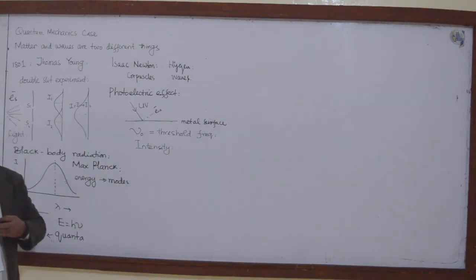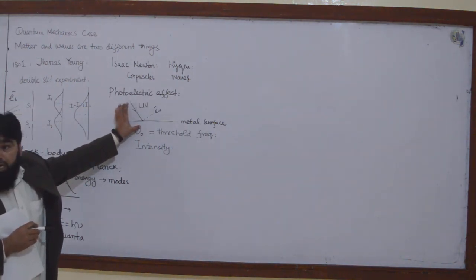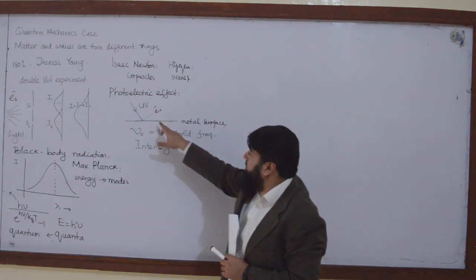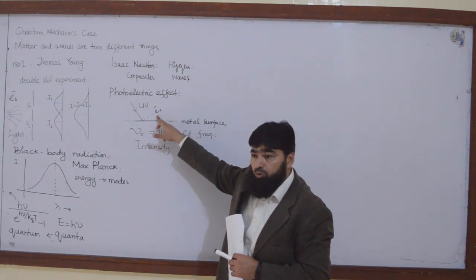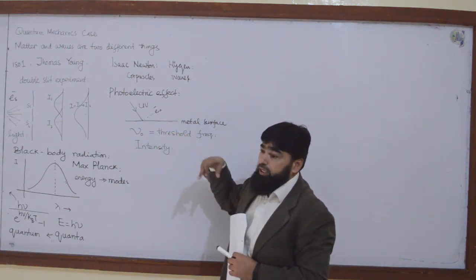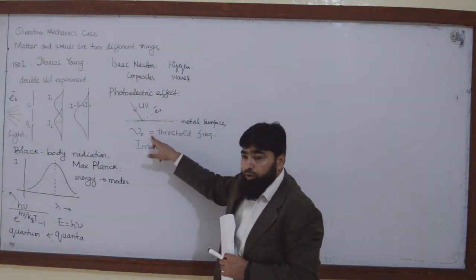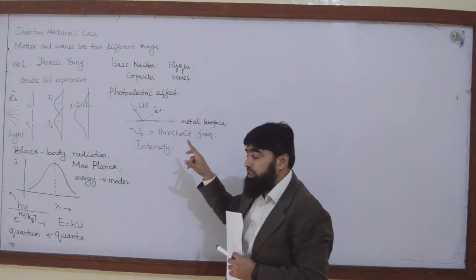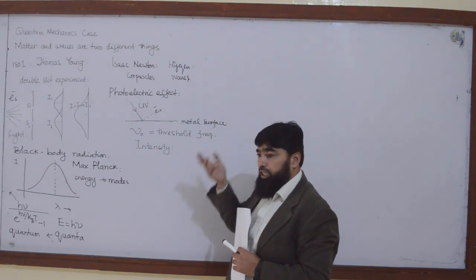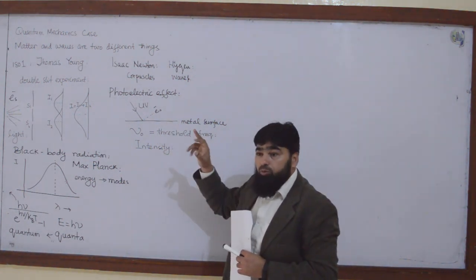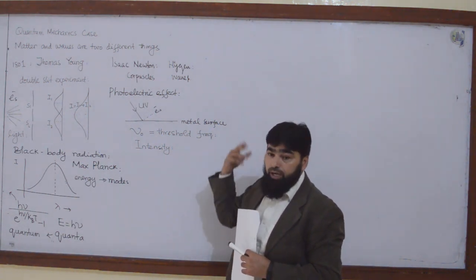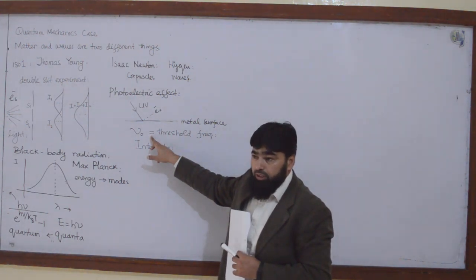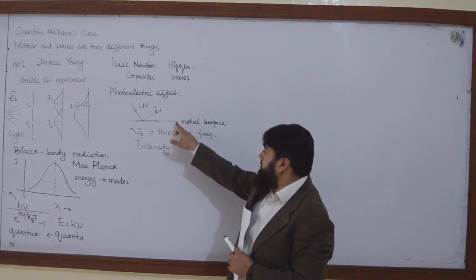The other problem was with intensity. If you increase the intensity of the light but the frequency is below the threshold frequency, then electrons were not emitted. This was a problem — why is intensity not emitting those electrons? Only when you match the threshold frequency does the energy become equal to the threshold energy, and only then are electrons ejected from the metal surface.